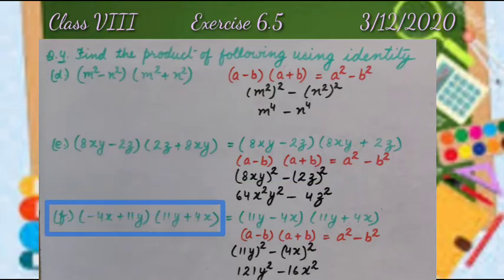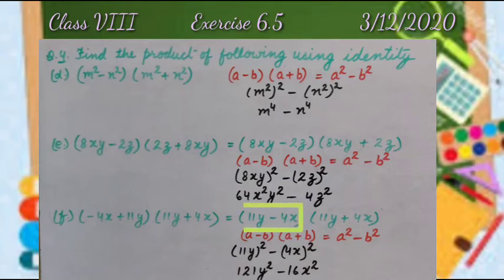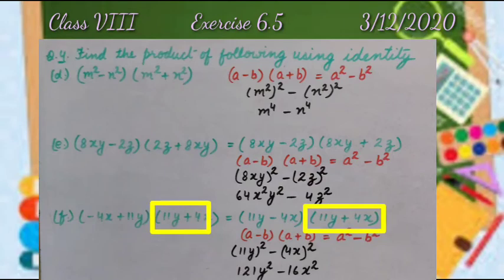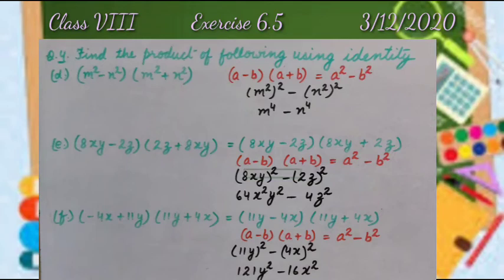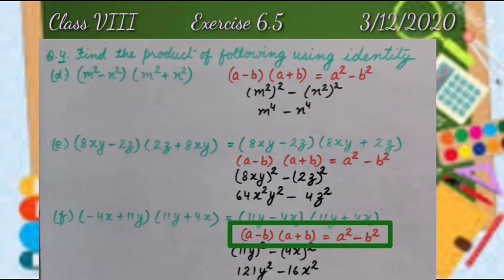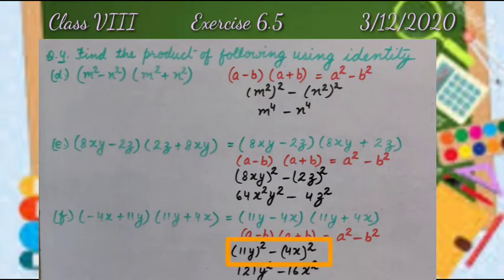Part F: -4x + 11y multiplied by 11y + 4x. Similarly, we can write 11y - 4x multiplied by 11y + 4x. Don't forget to write the identity (a - b)(a + b) = a² - b². Inserting the values, we get (11y)² - (4x)². And the product is 121y² - 16x².